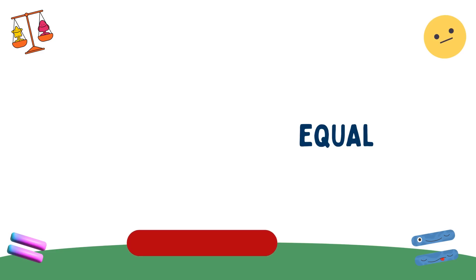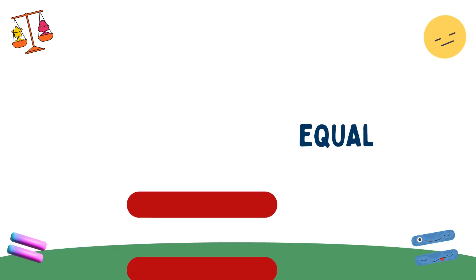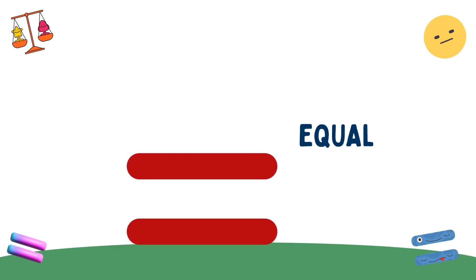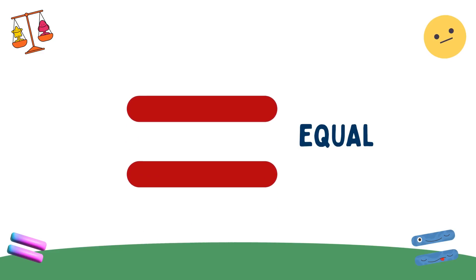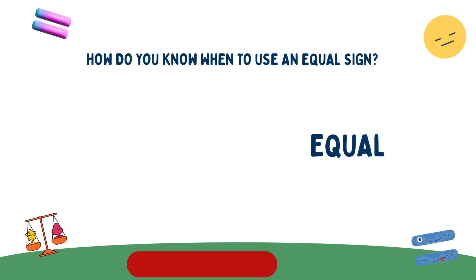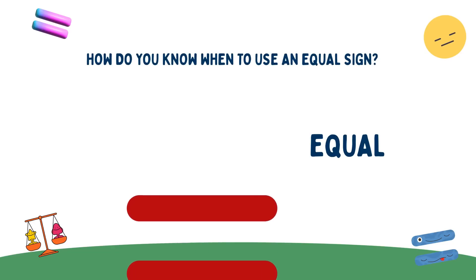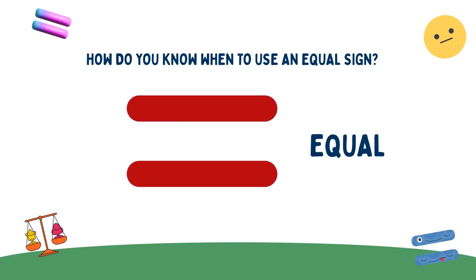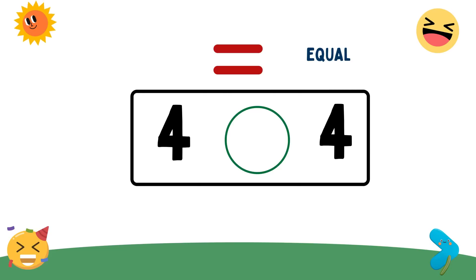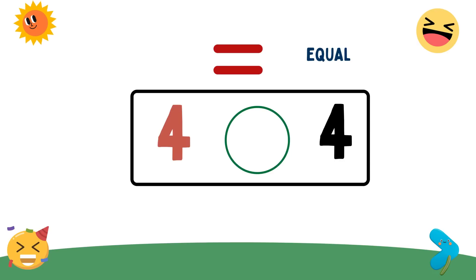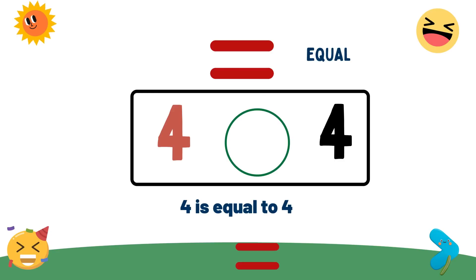Look at the red symbol. It is called an equal sign. Can you say after me? It's an equal sign. How do you know when to use an equal sign? Let's say we have these two numbers: 4 and 4. We use an equal sign when the first number equals the second number. Therefore, 4 is equal to 4.